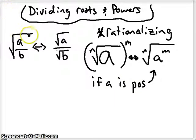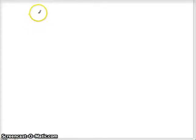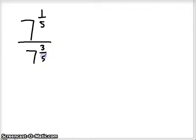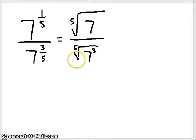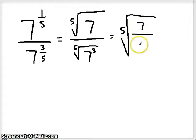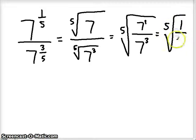Let's do some examples now — let's divide some roots and some powers. Let's say we had 7 to the 1/5th over 7 to the 3/5ths. We could rewrite it in radical form: take the 5th root of 7, and here we're taking the 5th root of 7 to the 3rd power. We're allowed to rewrite that exponent under the radical, and because we have the same index — we're taking the 5th root of both — we're allowed to rewrite that under one radical: the 5th root of 1 over 7 squared.